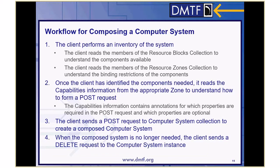The following steps can be taken as a general workflow for how a client can compose a computer system. First, the client performs an inventory of the system. The client reads the members of the resource blocks collection to understand the components available, and also reads the members of the resource zones collection to understand the binding restrictions of the components. Second, once the client has identified the components needed, it reads the capabilities information from the appropriate zone to understand how to form a POST request. The capabilities information contains annotations for which properties are required in the POST request and which properties are optional.